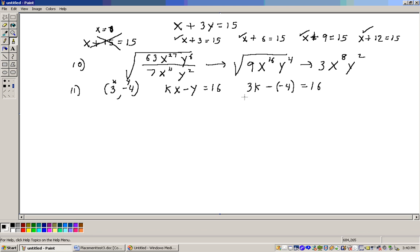Now just solve this. This is 3k minus a minus 4 is plus 4 equals 16. And now what I'm going to do is subtract 4 from both sides, get 3k equals 12, divide through by 3, and I get k equals 4. And so k equals 4 is the answer to that, and that would be answer C.